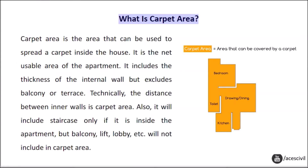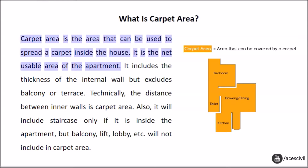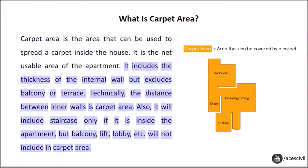What is carpet area? Carpet area is the area that can be used to spread a carpet inside the house. It is the net usable area of the apartment. It includes the thickness of the internal wall but excludes balcony or terrace. Technically, the distance between inner walls is carpet area. It will include staircase only if it is inside the apartment, but balcony, lift, lobby, etc. will not be included in carpet area.